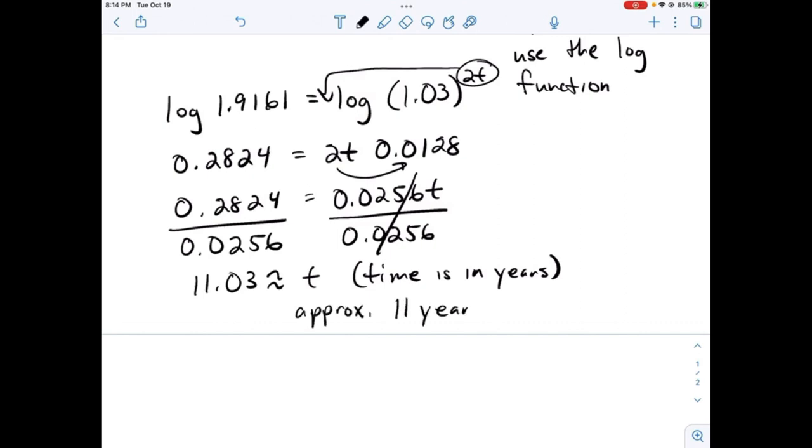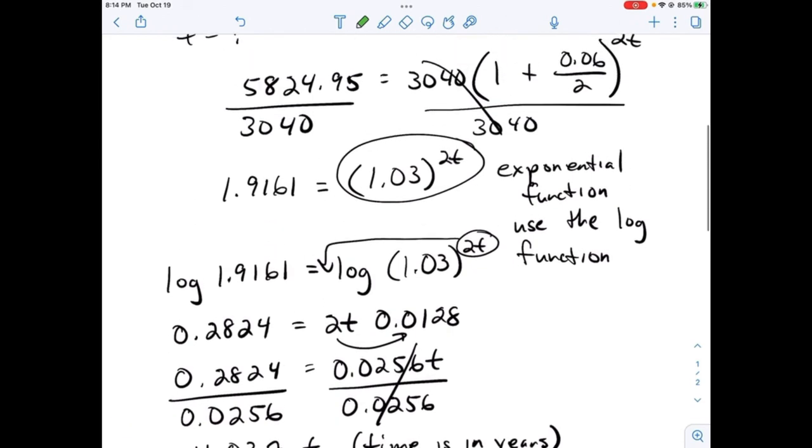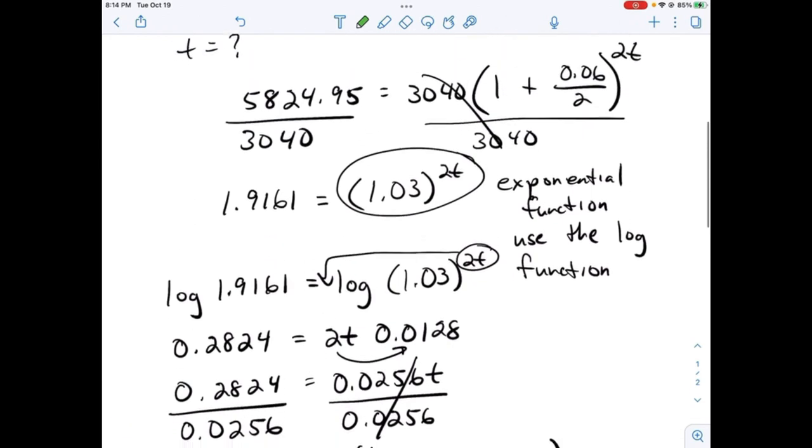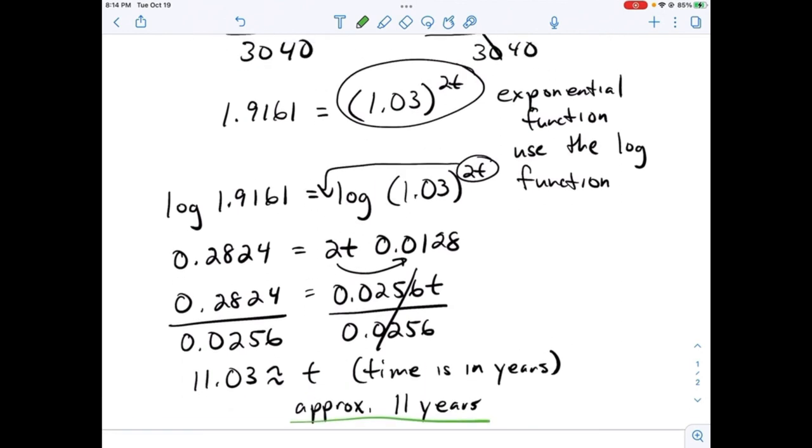Approximately 11 years for the investment of $3,040 to reach $5,824.95. And that is how you find time on compound interest.